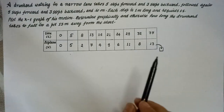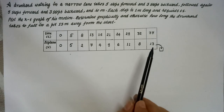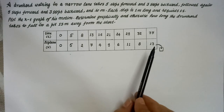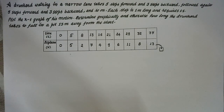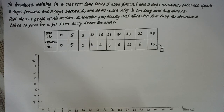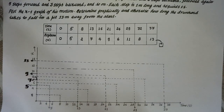So kids, the person takes 37 seconds to reach the pit which is 13 meters from the initial position. Now we are drawing the displacement-time graph for this person's motion. Time is considered along the x-axis and displacement along the y-axis. The table has been constructed and now we trace the graph according to this table.